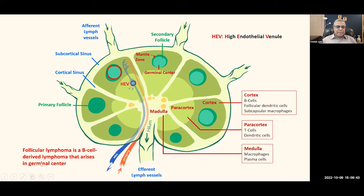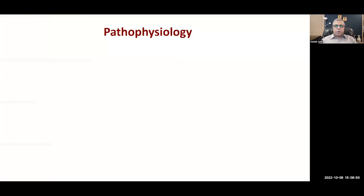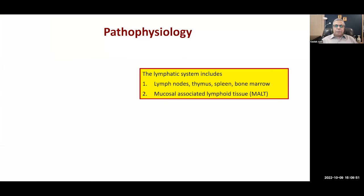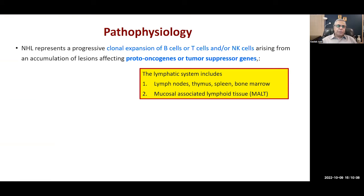Follicular lymphoma is a B cell-derived lymphoma that arises in the germinal center. The lymphatic system includes lymph nodes, thymus, spleen, bone marrow, and mucosal-associated lymphoid tissue. In the GI tract, we call it gut-associated lymphoid tissue.